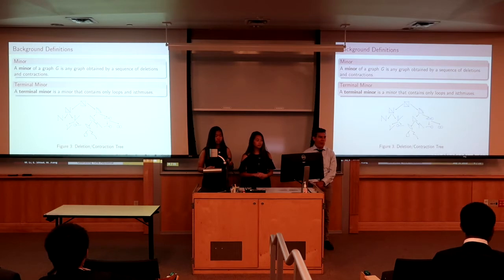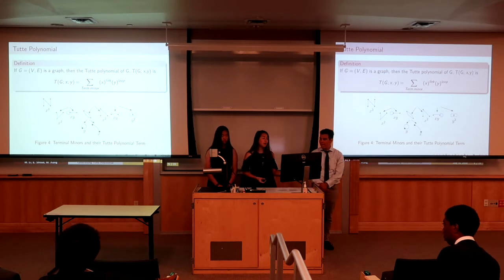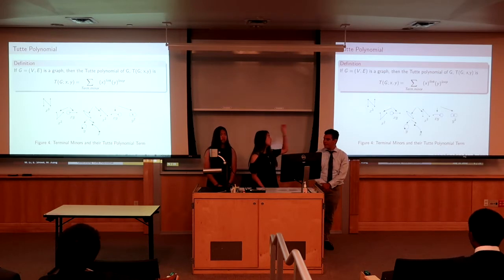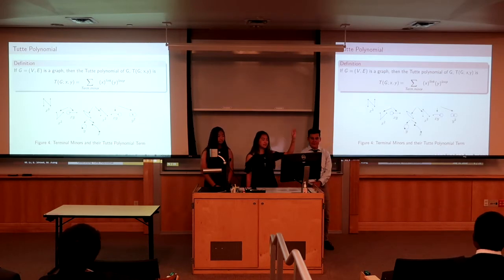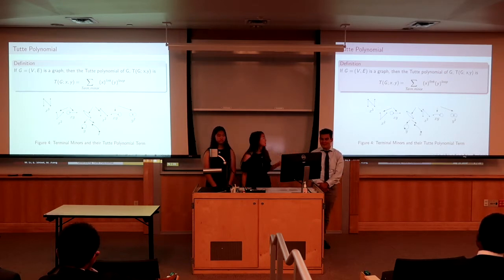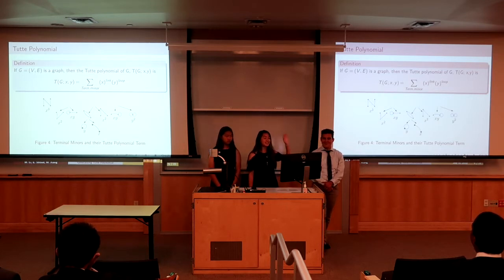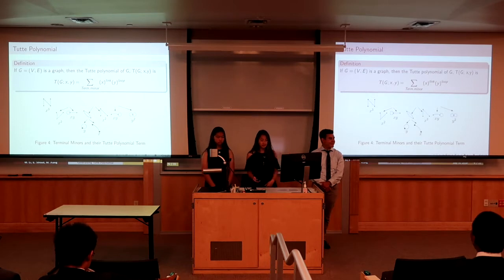A terminal minor is a minor that contains only loops and isthmuses. We can construct the top polynomial by counting the number of isthmuses and loops. We raise x to the number of isthmuses in each terminal minor and y to the number of loops in each terminal minor. For example, if we look at the terminal minor on the very left, we see that there are three isthmuses, so the term would be x to the third, and we sum over all the terminal minors.